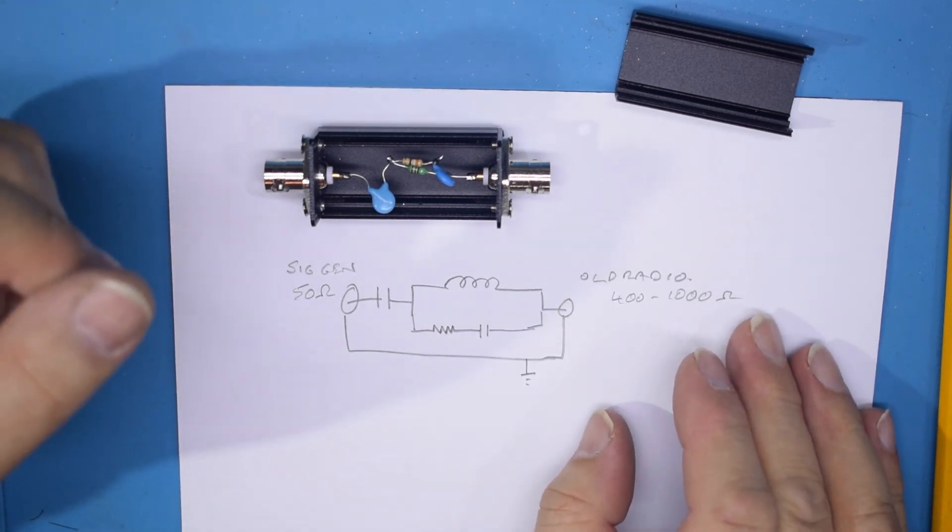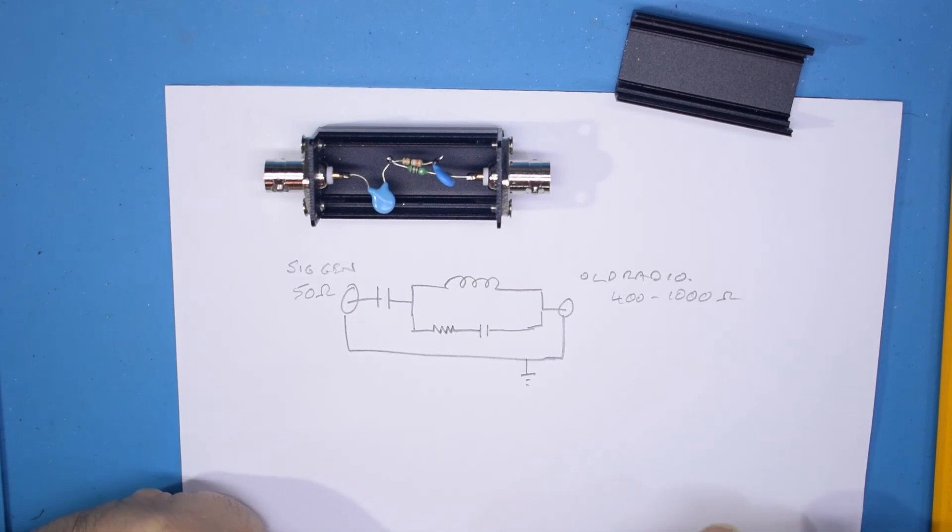So there we go. That's my dummy antenna for vintage radio servicing. I hope you enjoy this little sort of interlude from what we normally do, and hopefully you'll stick around and watch some of the other videos.